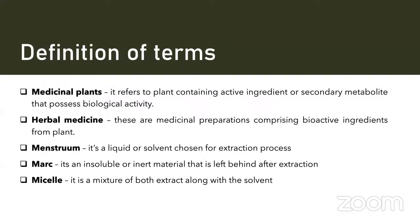Before going into phytochemicals, there are certain terms you need to familiarize with. Medicinal plants basically refers to plants containing an active ingredient or secondary metabolite that has some biological activity. Herbal medicines are medicinal preparations that contain bioactive ingredients from plants. Menstruum is a liquid or solvent chosen for the extraction process. Marc is the insoluble or inert material left behind after extraction.